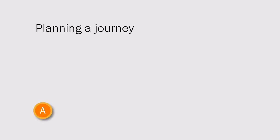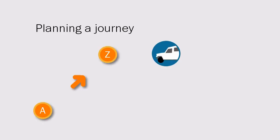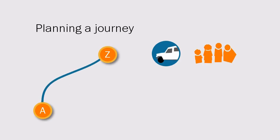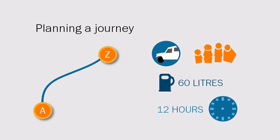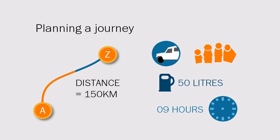Imagine that you have planned a journey from point A to point Z. In the plan, you know what car you will use, the routes you will travel, how many people will be travelling, and the amount of fuel needed for the journey. You also have an estimate of the time for travelling. Once the journey starts — the implementation of the plan — every few hours you look at the fuel gauge, check the distance travelled, and perhaps even ask how the passengers are doing. This is known as monitoring.